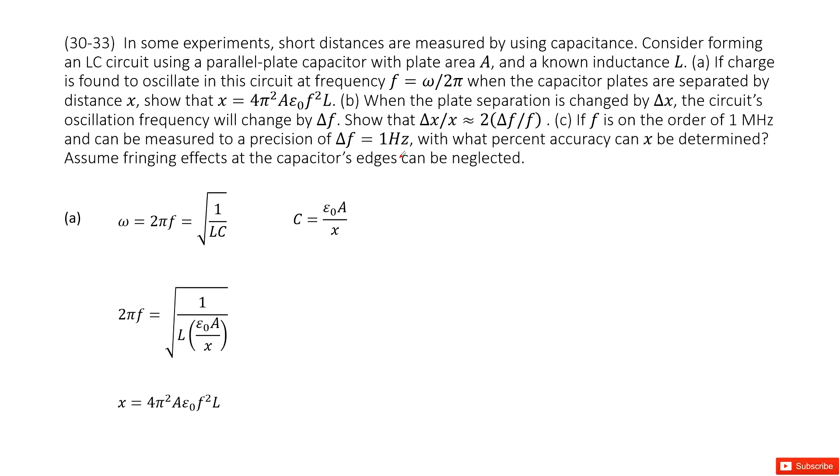So there we have an LC circuit. And for this LC circuit, we can see that L is just fixed, but C can change. C is capacitance. So we can see the capacitor planes are separated by distance x, and this capacitance C can change with x.